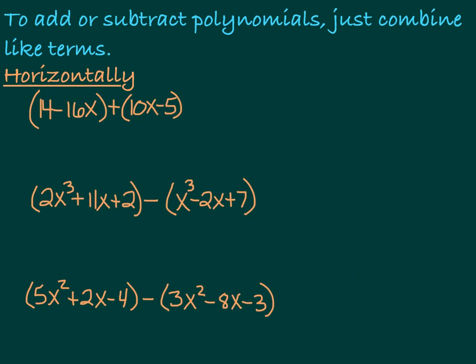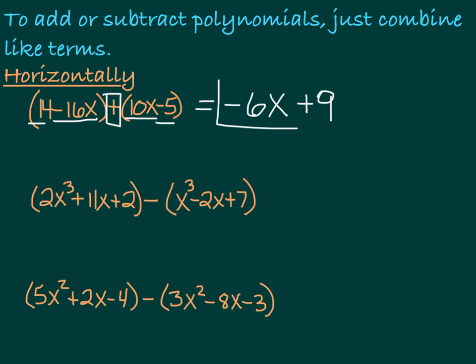Here are three example problems. The first one, we've got 14 minus 16x plus 10x minus 5. You have to pay attention and see that this is a plus. We don't FOIL addition, we just combine like terms. So I have negative 16x and I have 10x, so that put together will give me minus 6x. And then I have 14 and negative 5, so that's plus 9. Negative 6x plus 9 — that's the answer. That's all you've got to do.